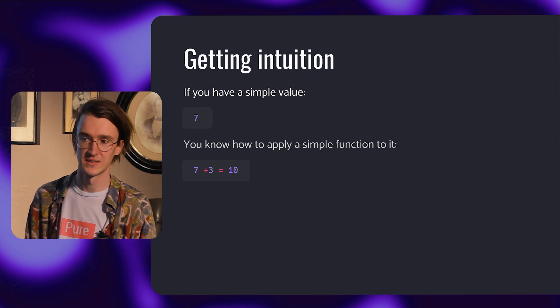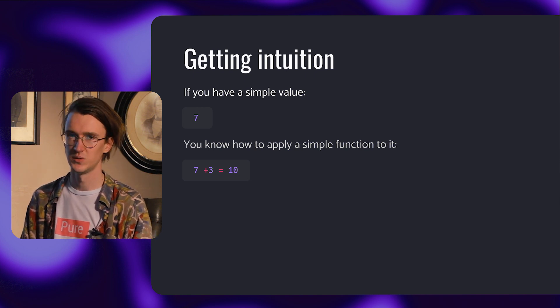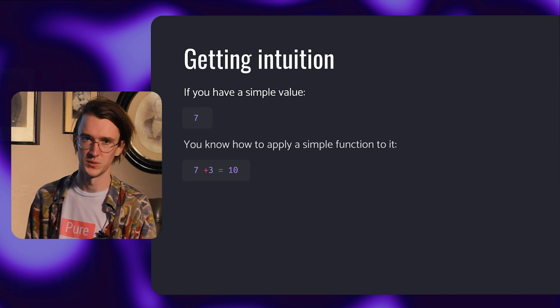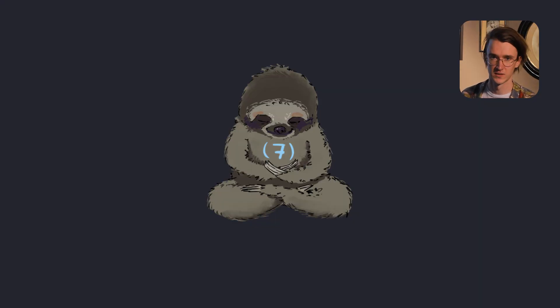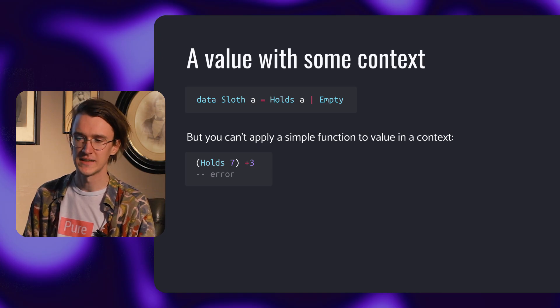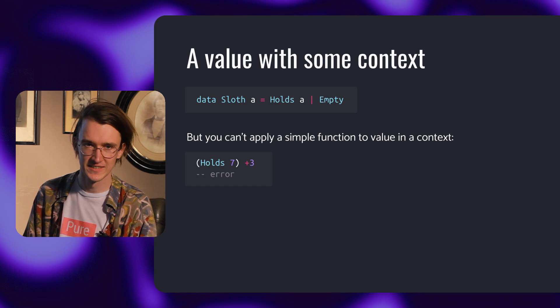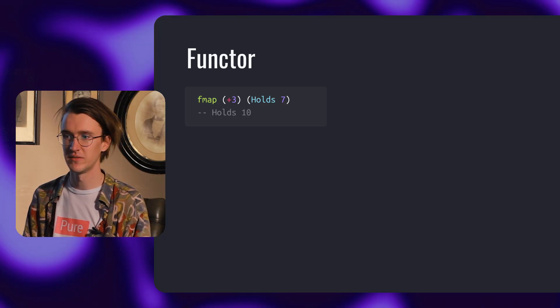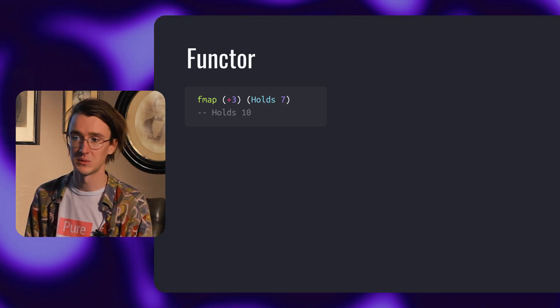If you have a simple value like 7, you know that you can apply a simple function to it. For example, you can do 7 plus 3 and get 10. But now imagine that you have some value with some context, and depending on the context, applying the function to a value gives a different result. But you can't apply a simple function to a value in a context — it's a compilation error. So how do we do it? This is the point when a Haskell developer reaches out for functor, specifically the function fmap, sometimes called just map.